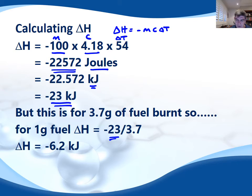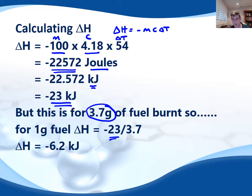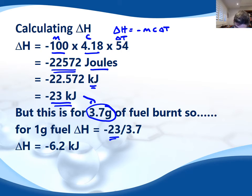Notice that the 23 kilojoules relates to the amount of fuel that was burnt. We could expect that if we burnt more fuel, we would have a higher delta H value — for example, if we burnt 7.4 grams of fuel, we could probably expect about 46 kilojoules to be produced. This is why we calculate the delta H and then compare it to how much fuel was actually burnt to get our calculation standardized.